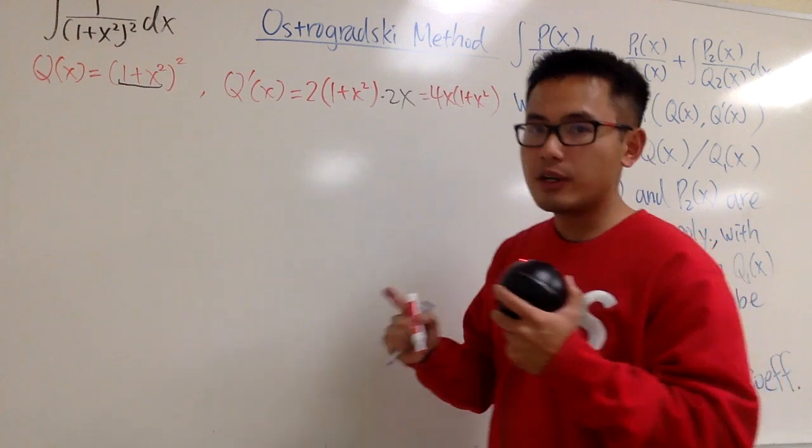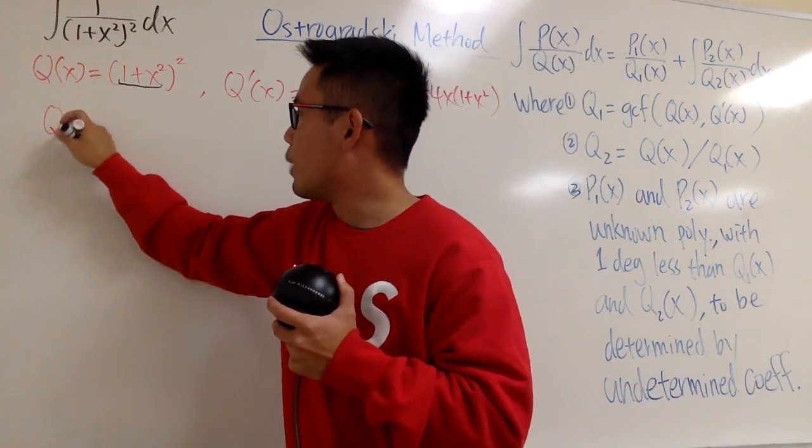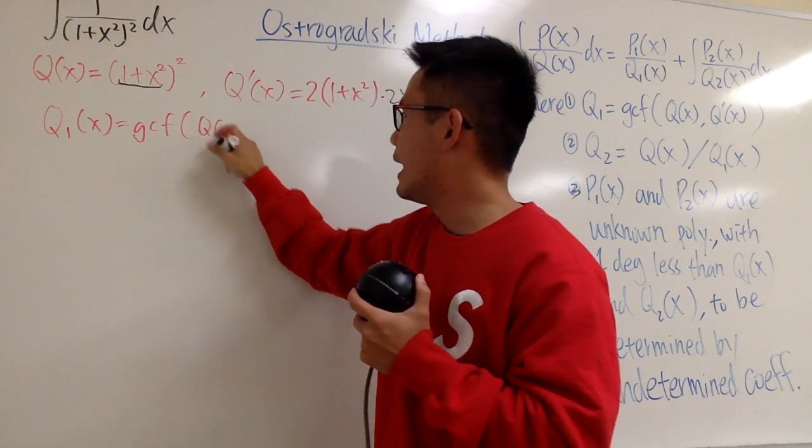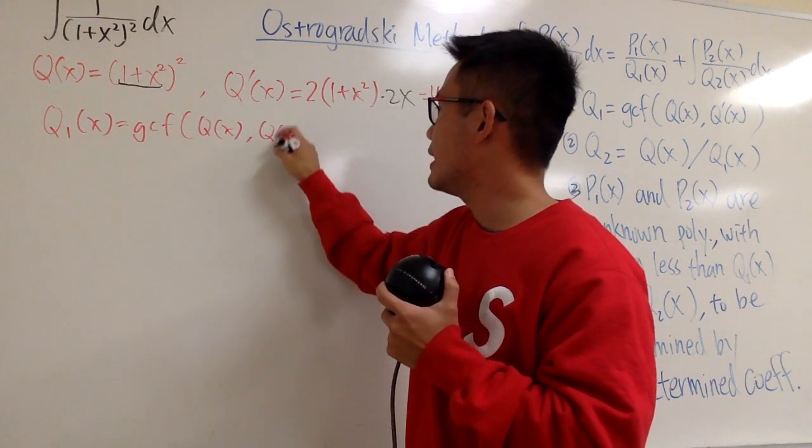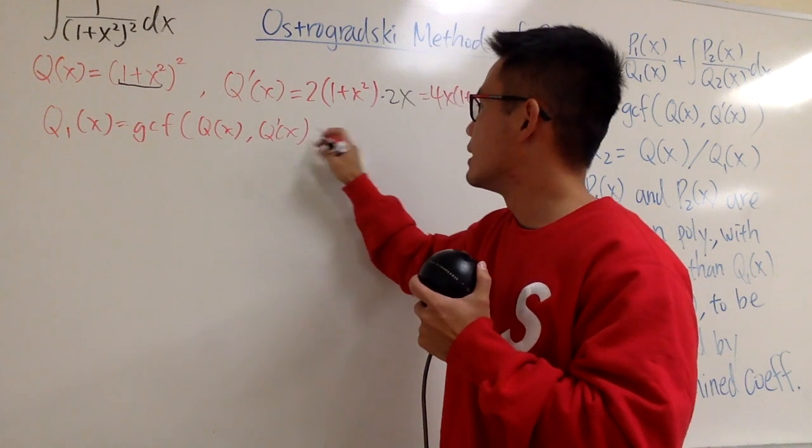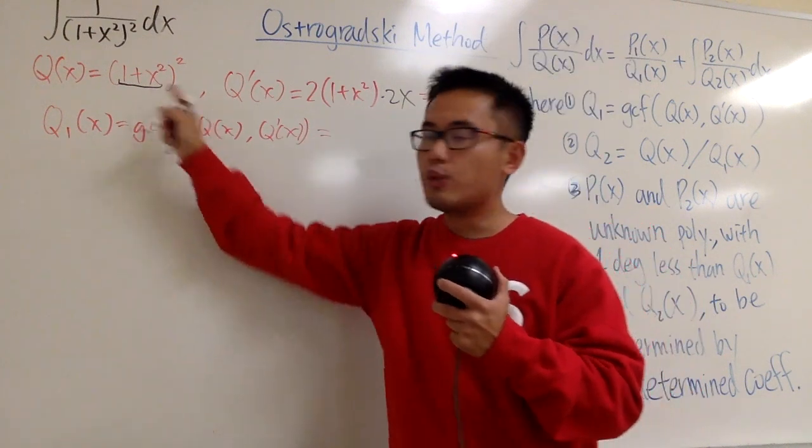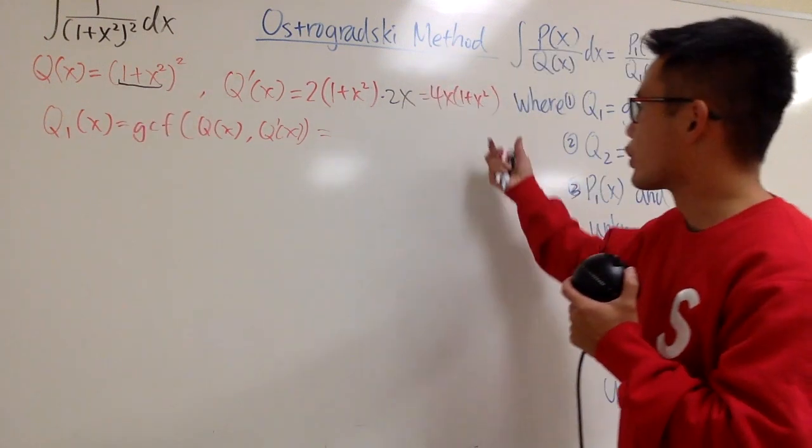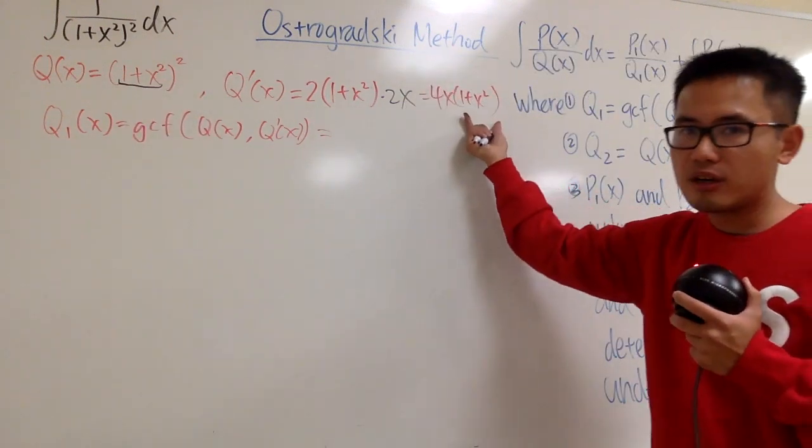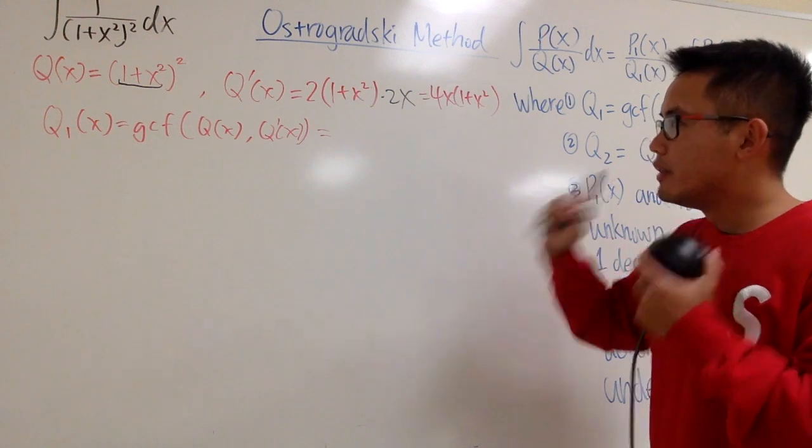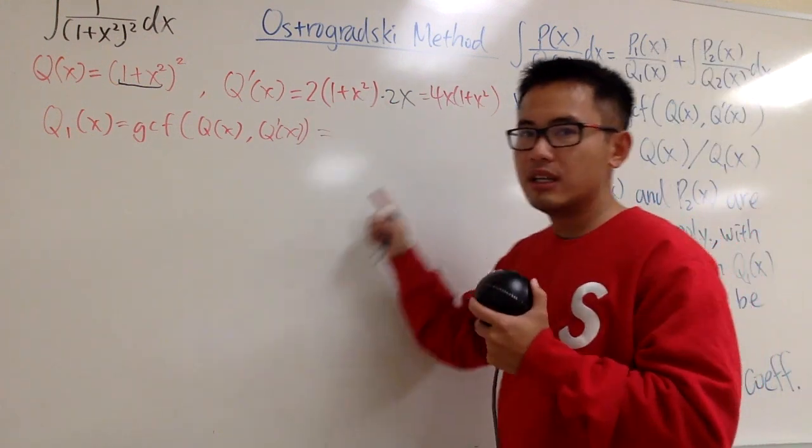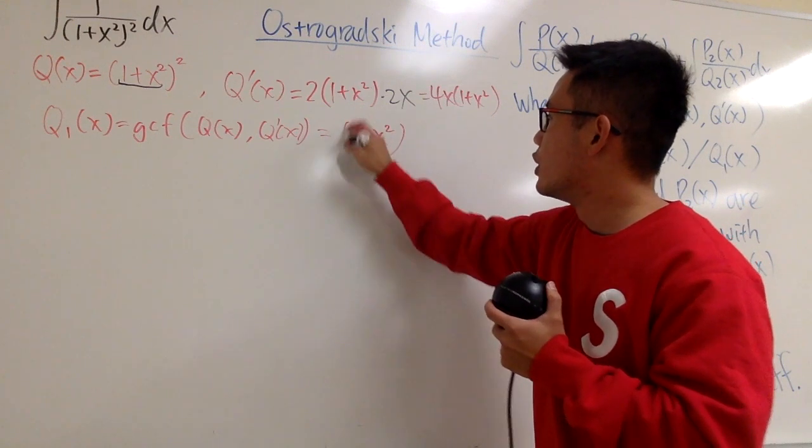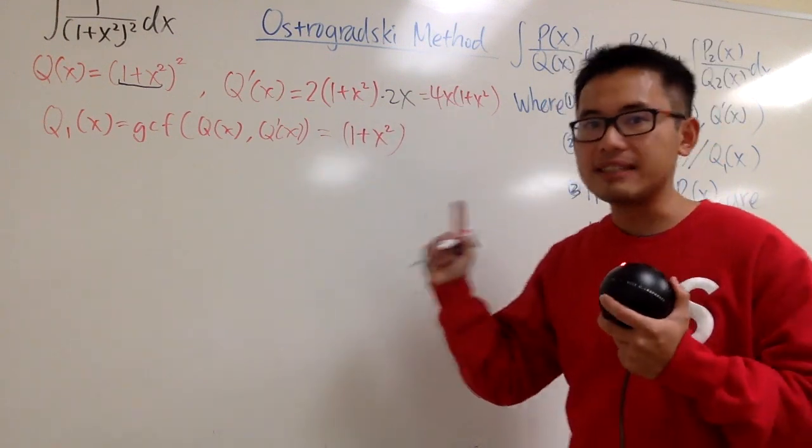And with that being said, let's figure out what q1 is. q1 is just the greatest common factor of q and q prime. That's what it says. And you see that right here we have this factor, 1 plus x squared, and then to a second power. And then for q prime, we also have this factor, 1 plus x squared. Therefore, the greatest common factor is just 1 plus x squared. So let me just write it down, 1 plus x squared to the first power, and that is q1.